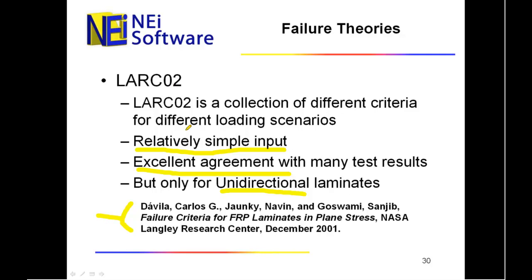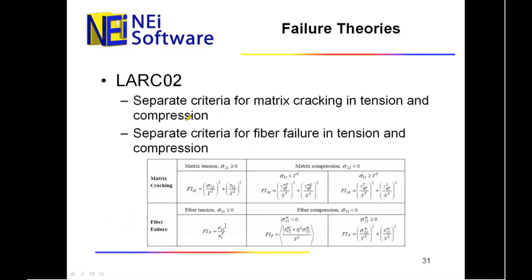What LaRC02 has is these different criteria. You have a separate one for matrix tension, for fiber tension, for matrix compression, for fiber compression, and it calculates a matrix cracking and a fiber failure one, and then basically reports the worst of the failure indices to you as the failure index based on these six different formulas.